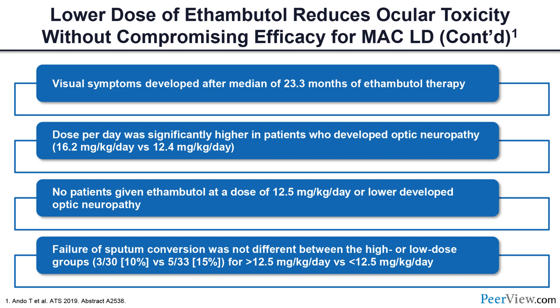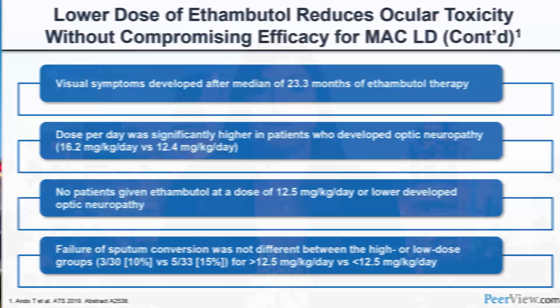Dose per day was significantly higher in patients who developed optic neuropathy: 16.2 mg/kg/day versus 12.4 mg/kg/day. No patients given ethambutol at 12.5 mg/kg/day or lower developed optic neuropathy, and the failure of sputum conversion was not significantly different between the two dosed groups. This study suggests that 12.5 mg/kg/day or lower may be adequate in treating patients with guideline-based therapy, though larger studies are warranted.